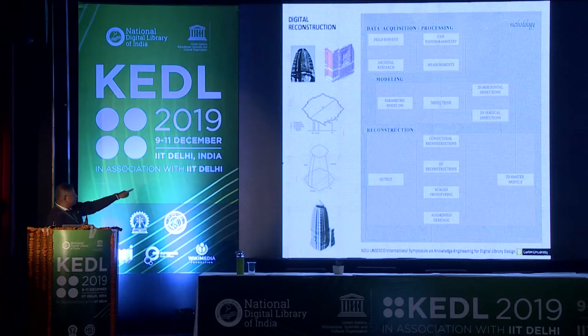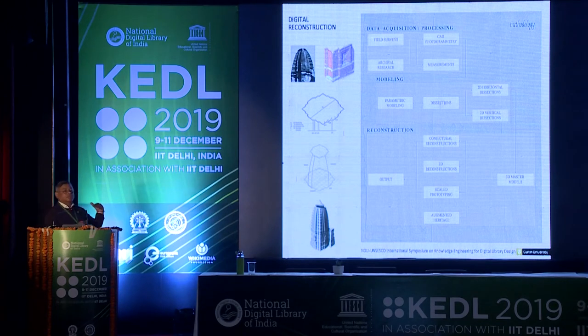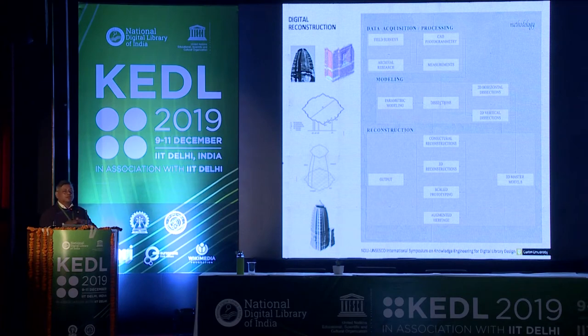Once we have these tools for interrogating data with geometry, we can build reconstructions. They start as wireframe models, and then gradually we layer these wireframes with different levels of detail. Then we get the final artifact, which you see at the bottom. We try to stay away from textures and colors — we keep it black and white because we are more interested in the geometric knowledge embedded within, so that we can actually extract more information from that.